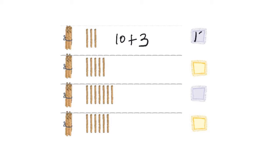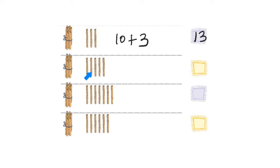How many sticks do I see here? I see ten plus one, eleven, twelve, thirteen — totally thirteen sticks. In the next picture, I see one bundle of ten sticks and five more sticks: one, two, three, four, and five. So together I have ten plus five, which is fifteen sticks.